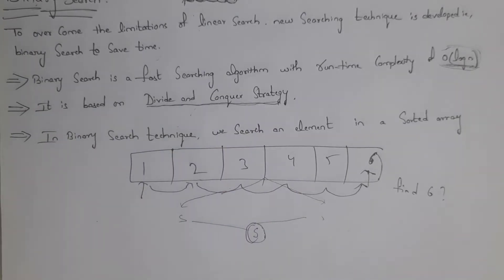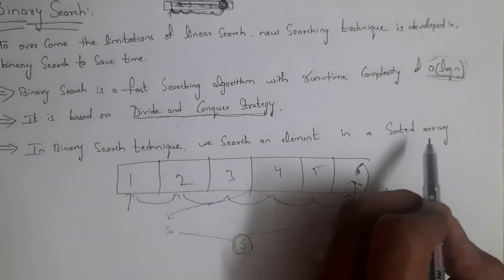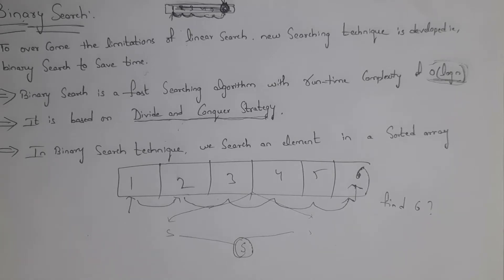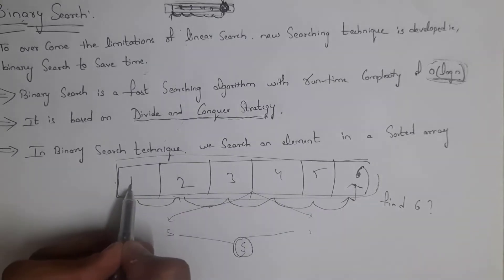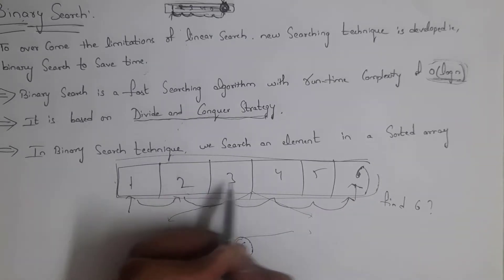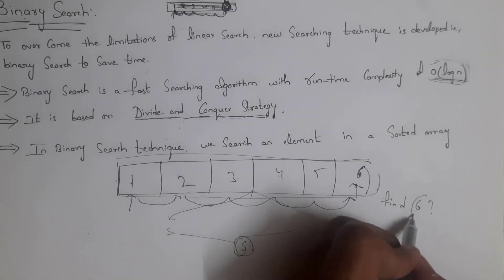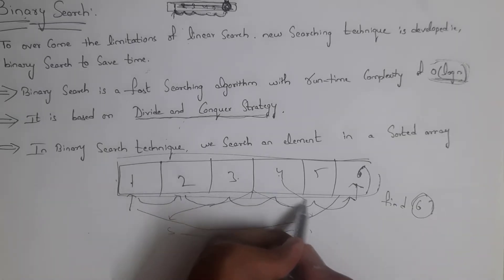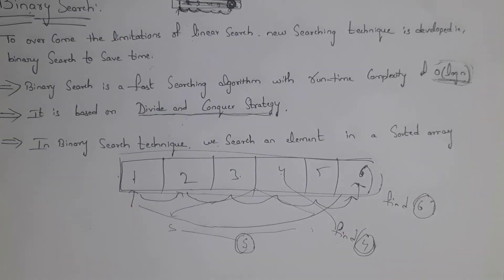This binary search follows divide and conquer strategy. In binary search technique, we search an element in a sorted array. A sorted array is one where elements are arranged from small to big. This is an example of a sorted array — elements one, two, three, four, five, six are arranged from small to big. We need to find a particular element in this sorted array using binary search. For example, here I want to find element four.